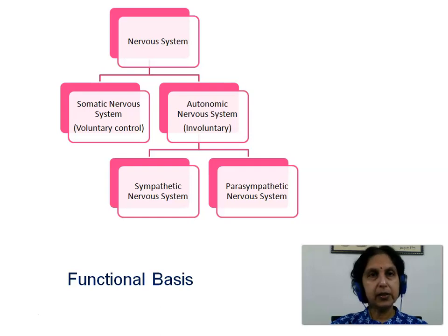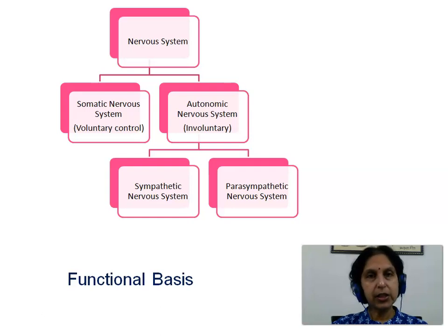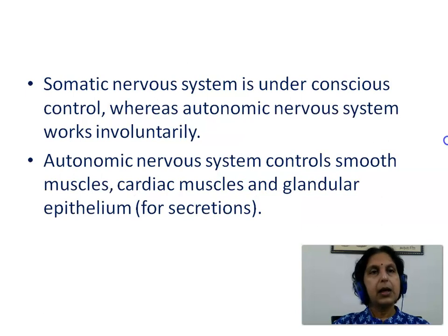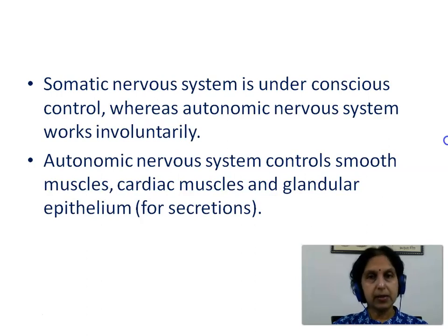We can also classify the nervous system based on functional basis into the somatic nervous system, which is under voluntary control, and the autonomic nervous system, which is involuntary. The autonomic nervous system is further subdivided into the sympathetic nervous system and the parasympathetic nervous system. The autonomic nervous system controls the smooth muscles, the cardiac muscles, and the glandular epithelium for secretion of the glands.